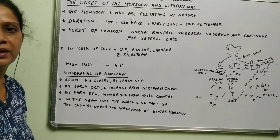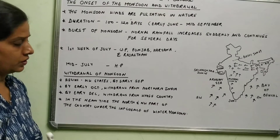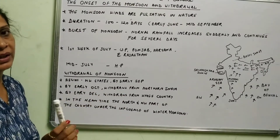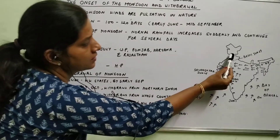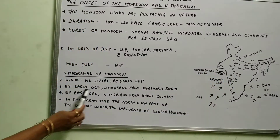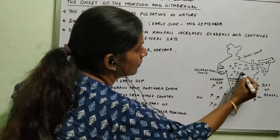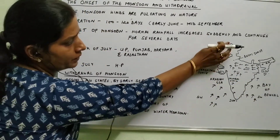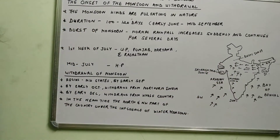From September onwards, the monsoon starts withdrawing from the country, beginning with the northwestern states by early September. Starting from the northwestern states, it begins withdrawing from that part of the country. Then by early October it withdraws from northern India. From the start of October it withdraws from that part of India, and after that it withdraws from the whole country. By December, the monsoon winds are totally withdrawn from the whole country.